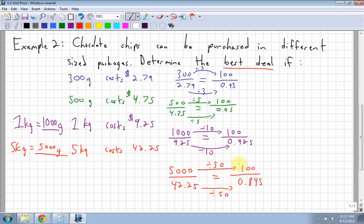So you can see right away which one is the better deal. This one here, which is the 5 kilogram one, is the better deal.